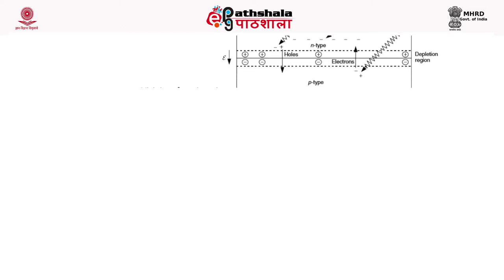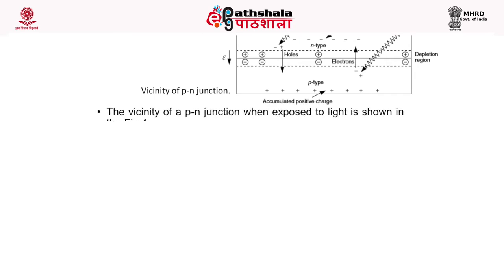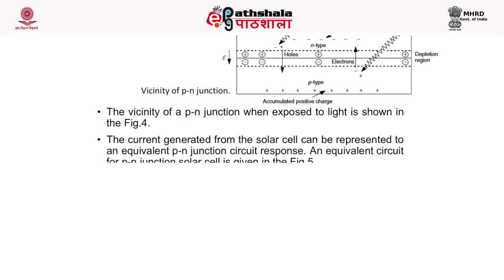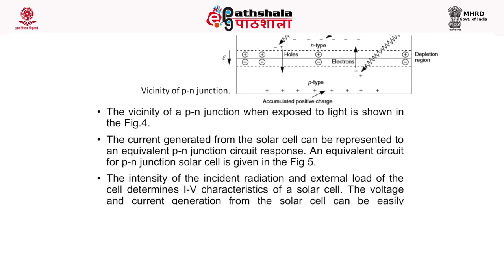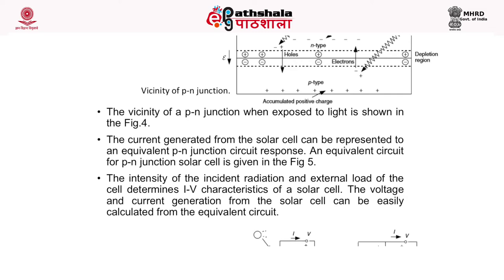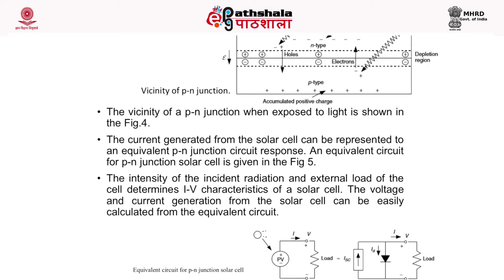This figure shows the vicinity of a p-n junction when exposed to light. The current generated from the solar cell can be represented by an equivalent p-n junction circuit. An equivalent circuit for a p-n junction solar cell is shown, and the intensity of incident radiation and external load determine the IV characteristics — the current and voltage characteristics — of a solar cell.